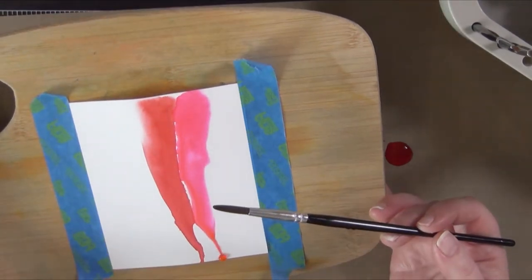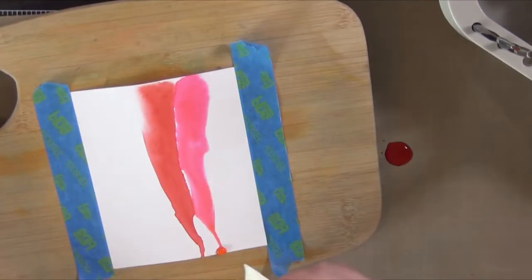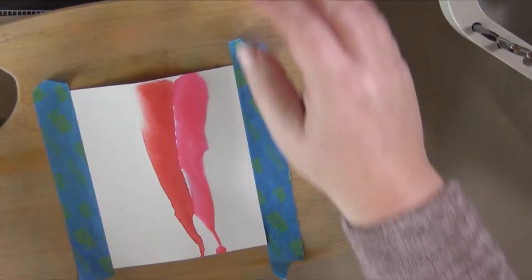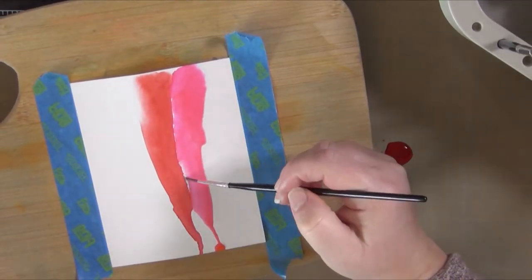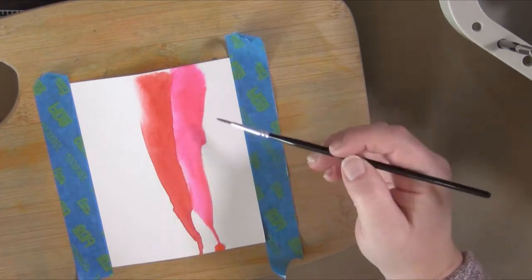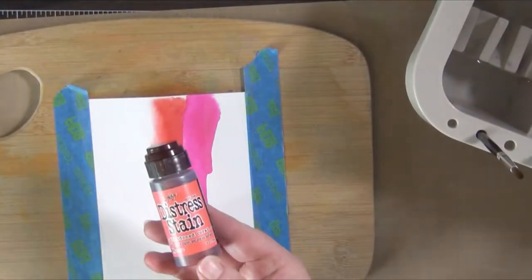The reason I'm drying in between layers is I want to have more of a distinct line between the colors. If you wanted more of a flow look you could leave the ink wet and come in with the next color right next to it and they would have more of a blending line.